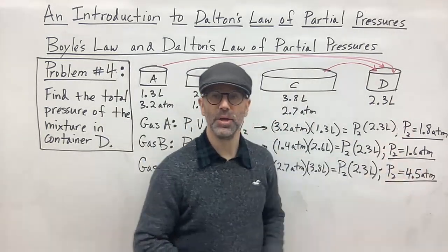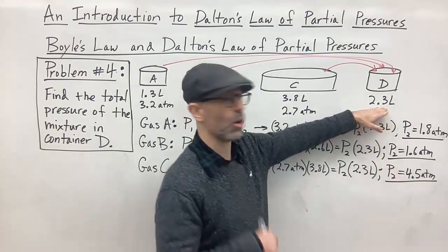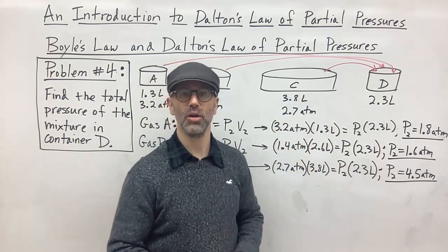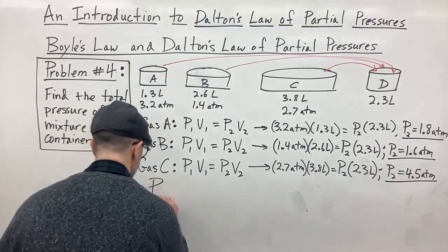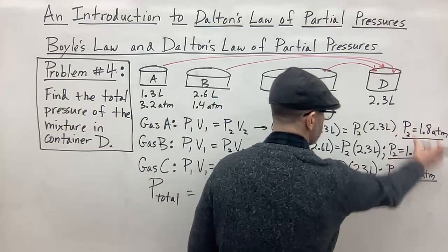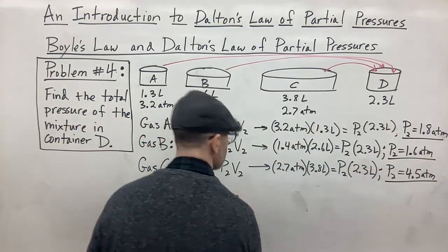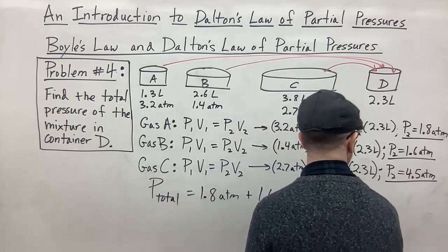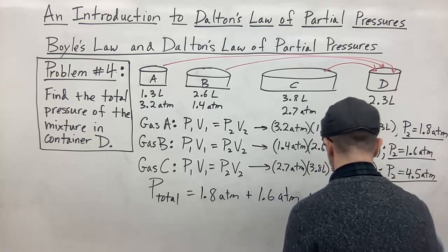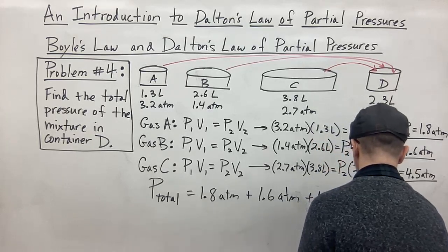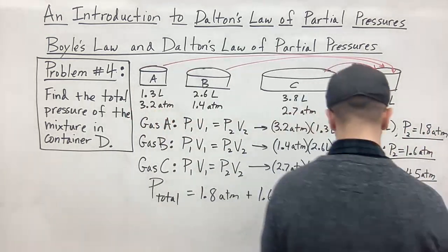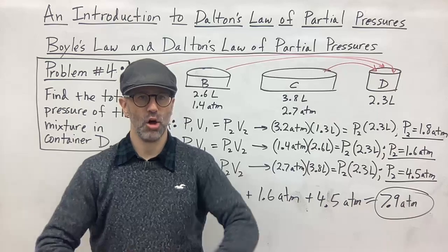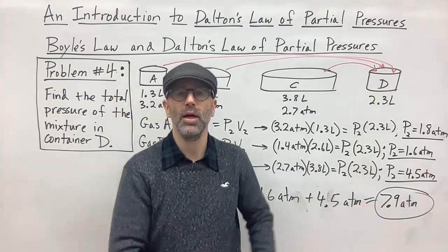Now that we have the partial pressures of each gas in container D, we use Dalton's Law to add them all together to get the total pressure: 1.8 atmospheres + 1.6 atmospheres + 4.5 atmospheres = 7.9 atmospheres. And that is how you use Boyle's Law in conjunction with Dalton's Law to solve these problems. Whenever you see a change in containers with a change in volume, think about applying Boyle's Law first before applying Dalton's Law.